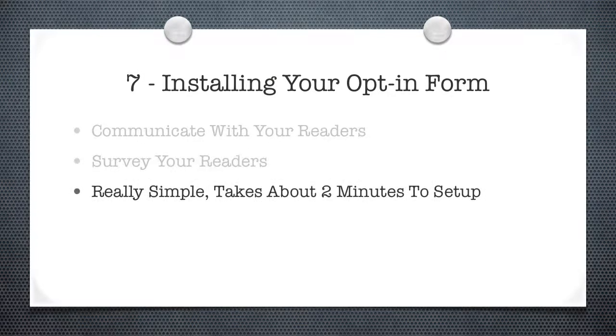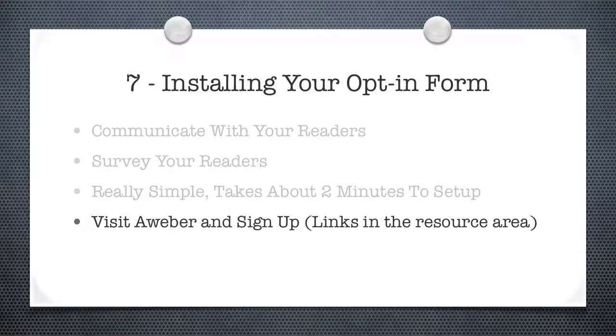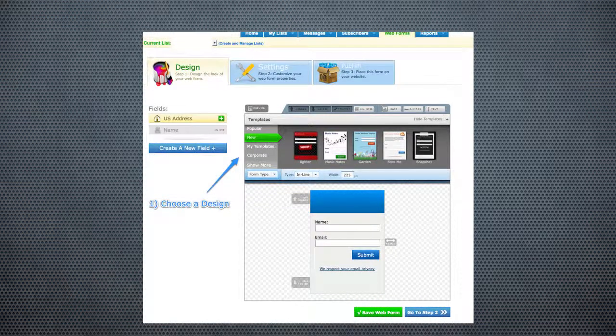Visit Aweber and sign up — I have the link down below in the resource area, so you can wait until the end of the video to decide if it's something you want to do. Once you sign up, you'll be presented with your dashboard. What you need to do is create a brand new list, give it a name, put in your contact information, and then you're presented with this screen where you create your web form. The web form is a little opt-in box that shows up on your website.